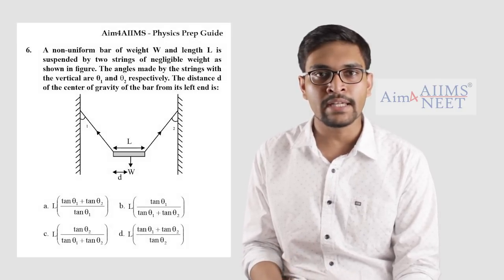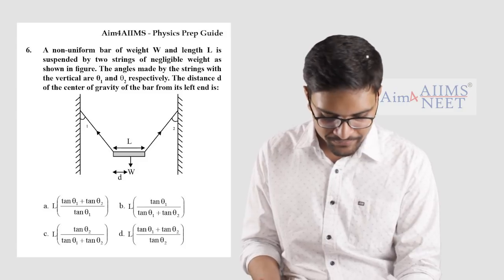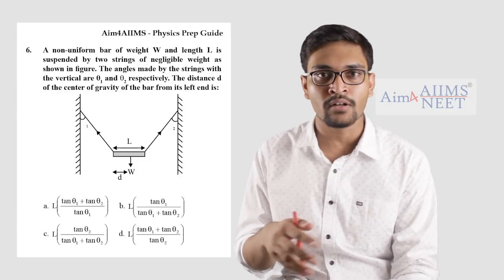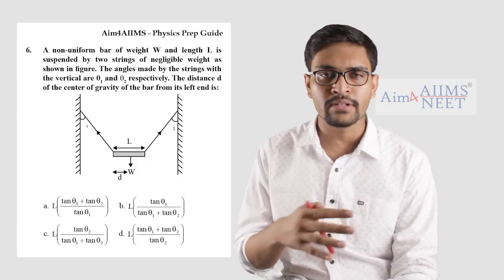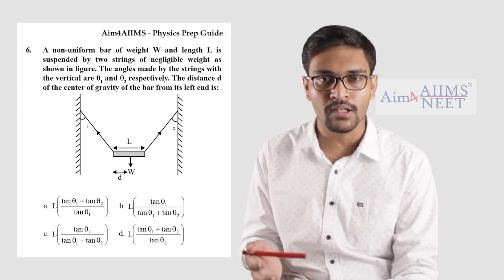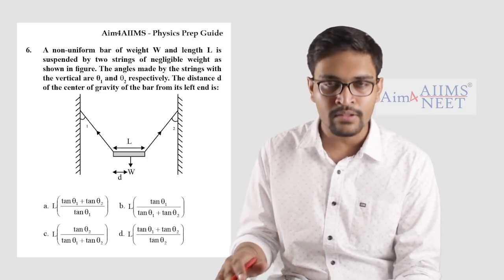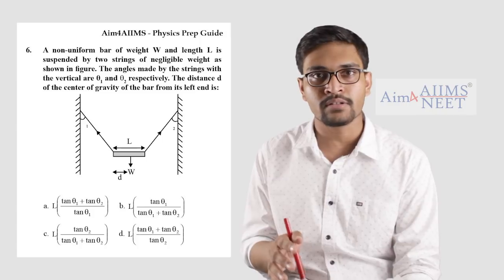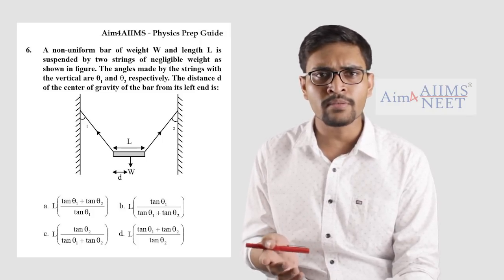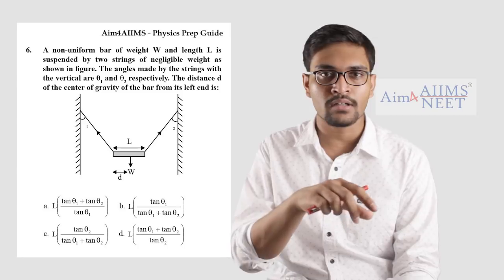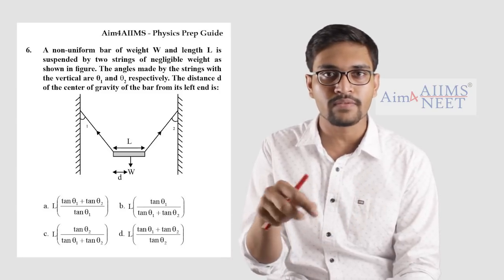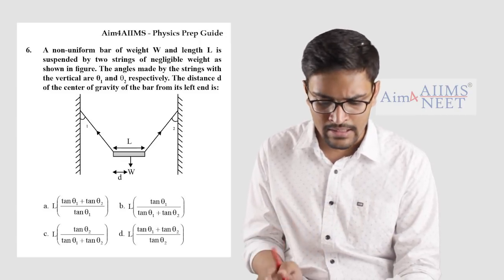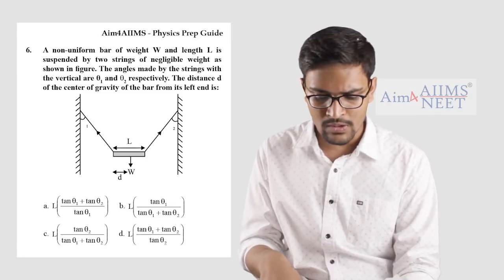This is a question from the AIIMS prep guide, page number 93 — question number 6. You have a non-uniform bar of weight W. Suppose you are not able to figure out how to make a formula; I will show you some ways of getting to the answer. Looking at the options, all four have L in the numerator. So it's definitely going to be in the numerator only, because as you increase L the center of gravity shifts away from the left end — L has to be in the numerator, and this holds for all four options.